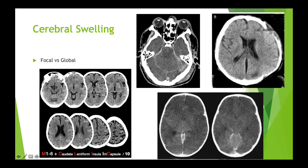The white cerebellum sign: because of the blood supply differences between the anterior and posterior circulation, if you've got complete knockout of your anterior circulation with no communication from the posterior communicating arteries, the cerebellum may be spared. The cerebral hemispheres appear very dark while the cerebellum appears relatively preserved — hence the white cerebellum sign.